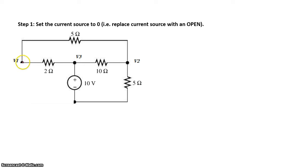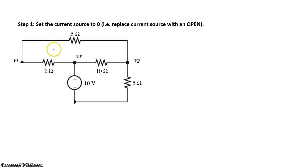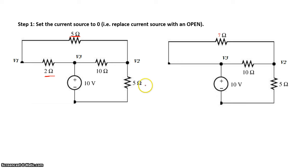We used to have a current source here — we've opened that and that wire is gone. So here's the circuit now. We have the 10 volt source and a 2 ohm resistor. If you look carefully, this 2 ohm resistor is in series with this 5 ohm resistor, so let's replace that with a single 7 ohm resistor. That's our combined 7 ohm resistor.